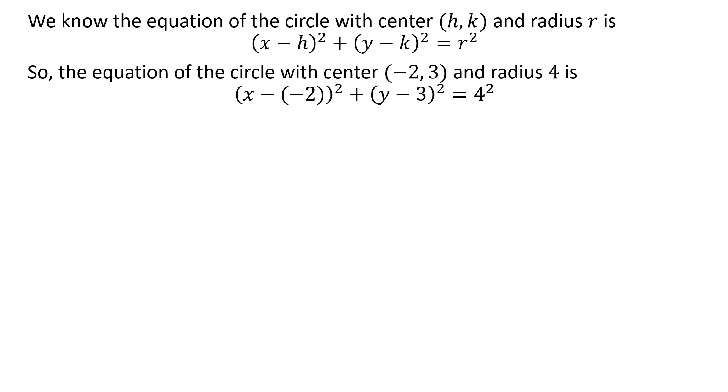So the equation of the circle with center (-2, 3) and radius 4 is (x - (-2))² + (y - 3)² = 4².